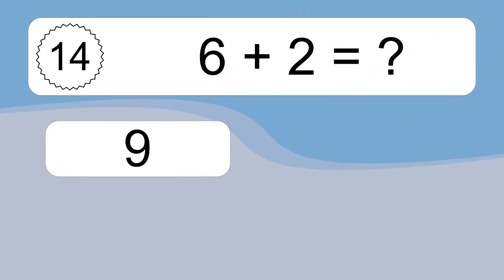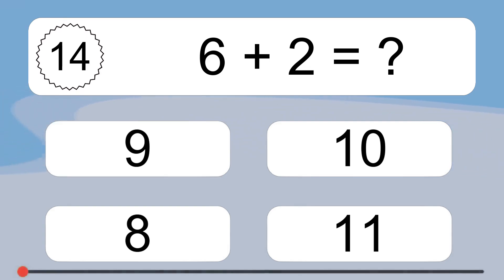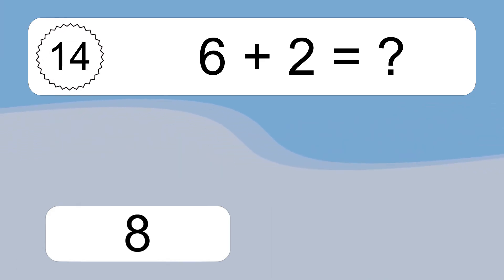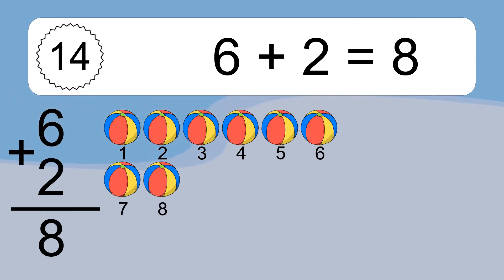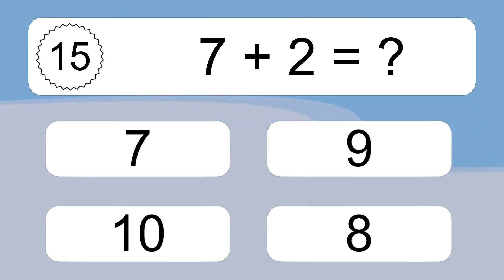6 plus 2 equals what? 6 plus 2 equals 8. Let's count it. 1, 2, 3, 4, 5, 6, 7, 8. 7 plus 2 equals 9.